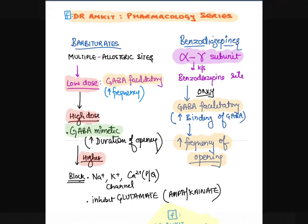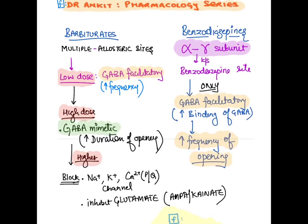Barbiturates in low doses are GABA facilitatory, increasing frequency of opening. In higher doses they become GABA mimetic — they themselves can open the channel. In still higher doses they inhibit sodium, potassium, and calcium channels and inhibit glutamate release. This makes barbiturates non-specific and very dangerous drugs.